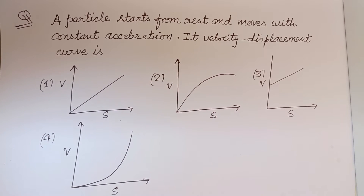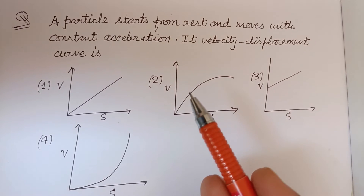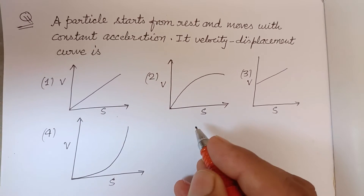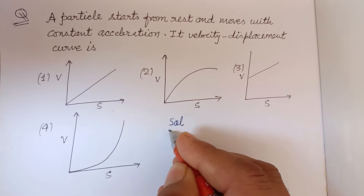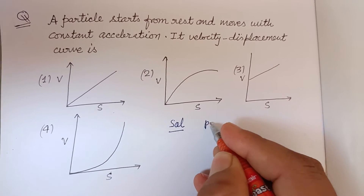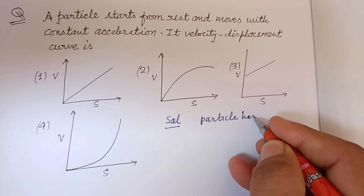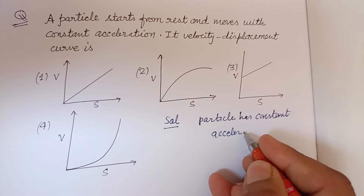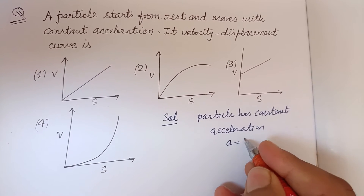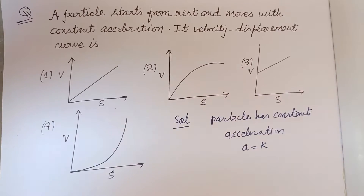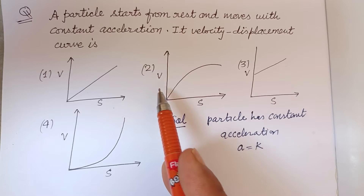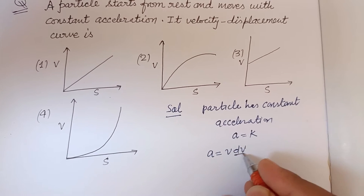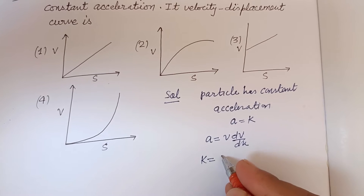Hello viewers, warm welcome to this YouTube channel. The question is: a particle starts from rest and moves with constant acceleration. Its velocity-displacement curve is asked. Since the particle has constant acceleration, we set a equal to k, and use the relation a equal to v dv over dx.